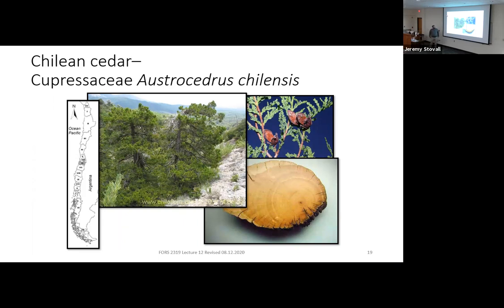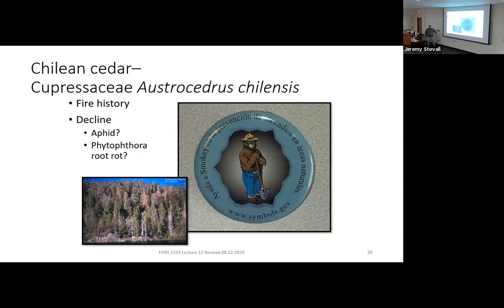Here's another Cupressaceae member: Chilean cedar, Austrocedrus chilensis. Chilensis refers to its location in central Chile; Ostro means southern; Cedris is the true cedar genus — so it's 'southern cedar.' Morphologically it has scale-like foliage like many junipers in Texas, with cones that look like a duckbill. Observers have noted a decline in Chilean cedar stands with a lot of mortality. They found aphids and Phytophthora root rots causing some issues, but those didn't seem to be the fundamental driver of decline.